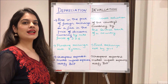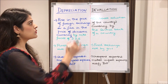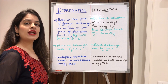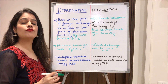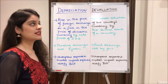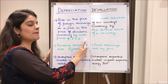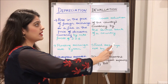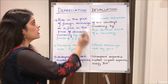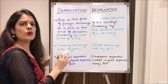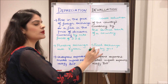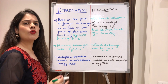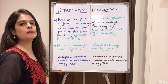Moving next to depreciation and devaluation. Both depreciation and devaluation lead to a rise in the price of a foreign currency and a fall in the price of the domestic currency. However, depreciation is driven by market forces of demand and supply, whereas devaluation is done deliberately by the central bank of a country. Depreciation operates under a floating exchange rate system, while devaluation comes under a fixed exchange rate system. Both lead to a rise in exports and fall in imports, thus rectifying the balance of payments.